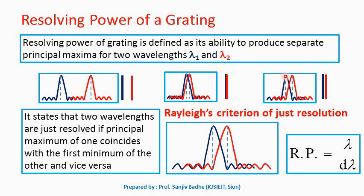So if the principal maximum of lambda 1 falls on the first minimum of the principal maximum of lambda 2, then we can say the two wavelengths lambda 1 and lambda 2 are just resolved, and we can see a very thin gap between them in the diffraction pattern. You can see the principal maximum of one wavelength coincides with the first minimum of the principal maximum of the other wavelength.